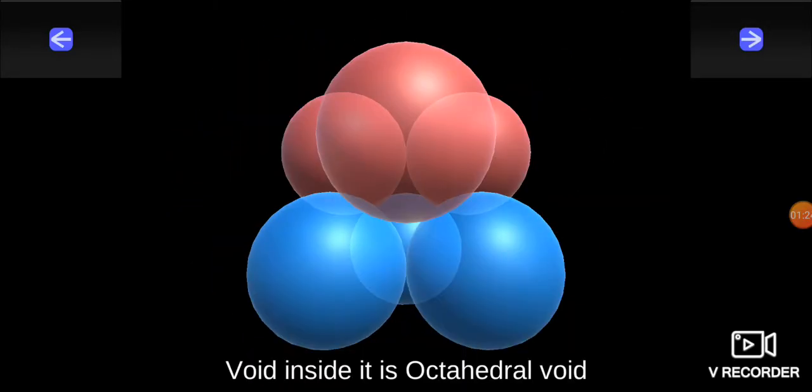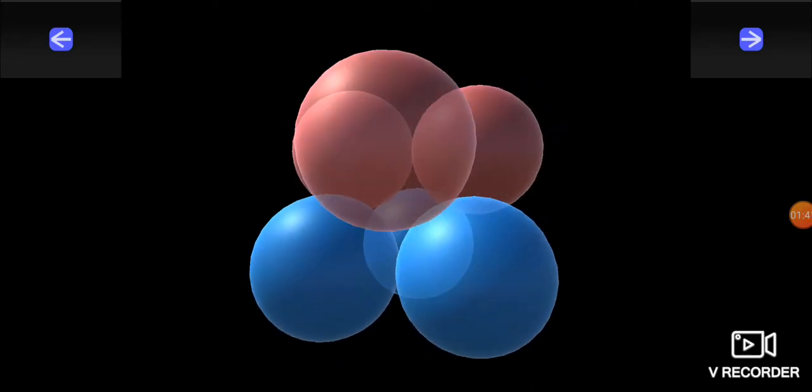And this is how the octahedral void is formed. When four atoms are on one plane and one is above and one is below, the empty space between these six atoms which are in contact with each other is considered to be the octahedral void.